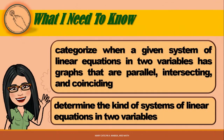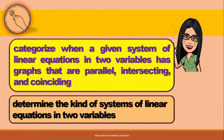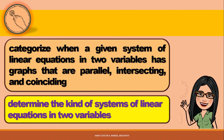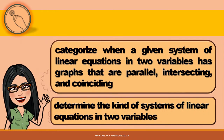At the end of this lesson, you are expected to categorize when a given system of linear equations in two variables has graphs that are parallel, intersecting, and coinciding, and determine the kind of systems of linear equations in two variables. Now that we know the objectives in this video, let's begin.